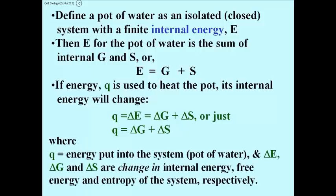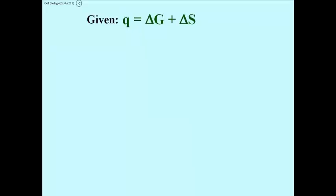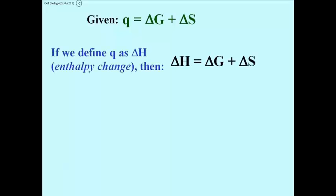Q is the energy put into the system — or it could also be the energy lost by the system when you turn the fire off and the pot cools down. Delta E, delta G, and delta S are the changes in internal energy, free energy, and entropy of the system respectively. So: Q = delta G + delta S. If we define Q as delta H, the enthalpy change, the equation becomes delta H = delta G + delta S, which is beginning to look like the equation we're trying to derive.